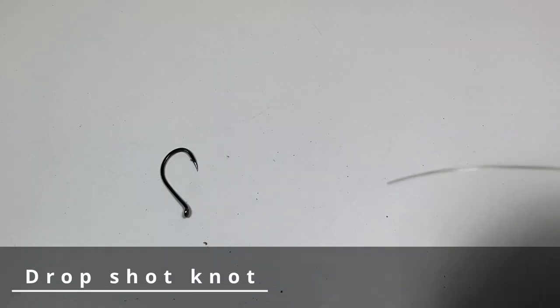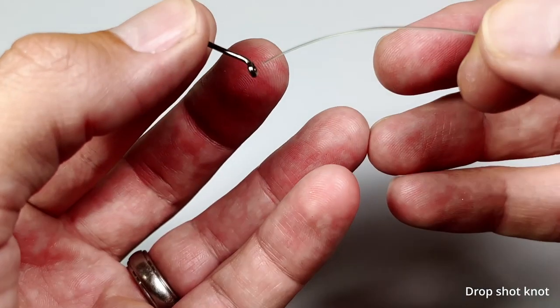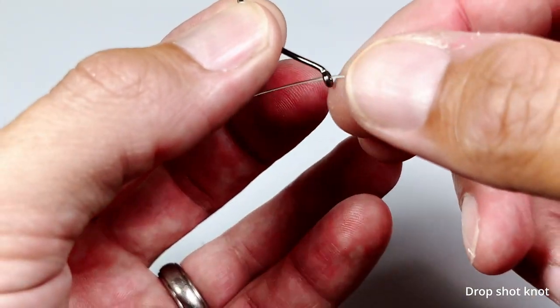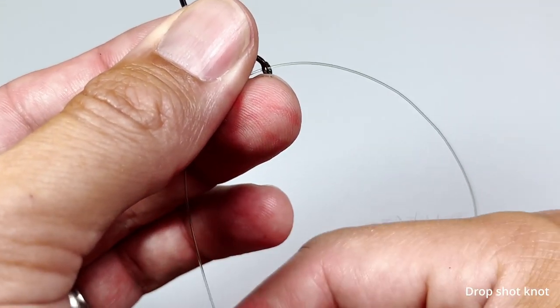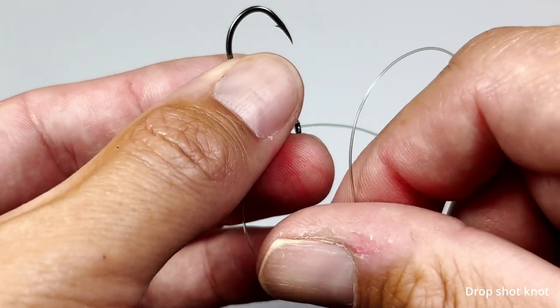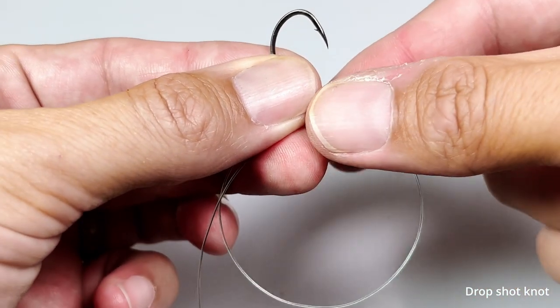The next knot is the drop shot knot. You take the tag end and pass it through the eye of the hook. Pull enough through to make a loop. With the tag end on the left side and the main line on the right,